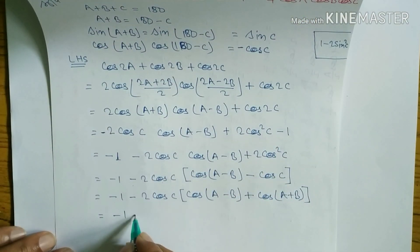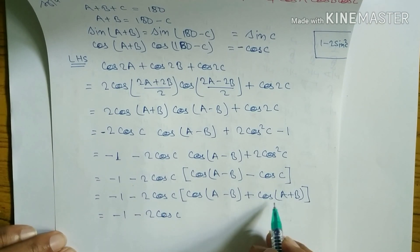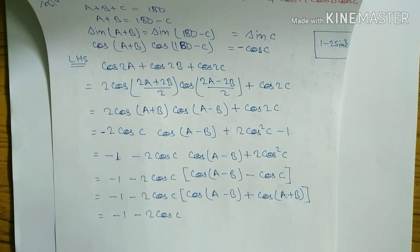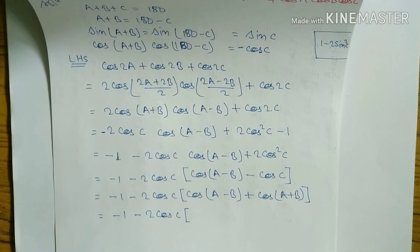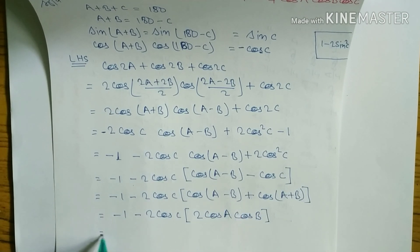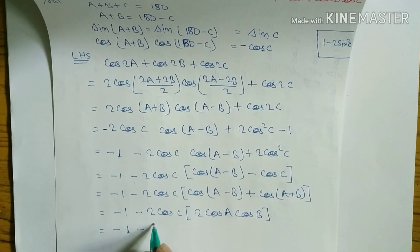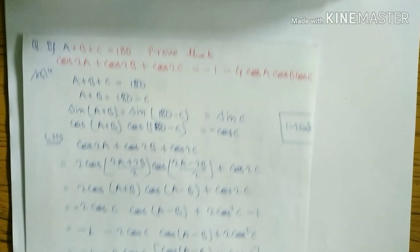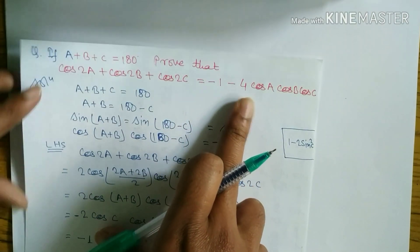After substituting, the bracket becomes cos(A-B) plus cos(A+B), which matches the formula: cos(A+B) plus cos(A-B) equals 2 cos A cos B. So we can write 2 cos A cos B. Multiplying: minus 1 minus 2 cos C times 2 cos A cos B, which gives minus 1 minus 4 cos A cos B cos C.